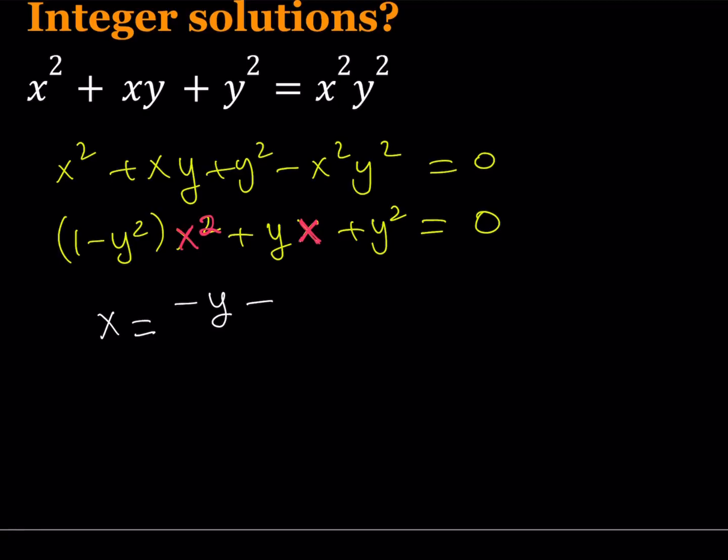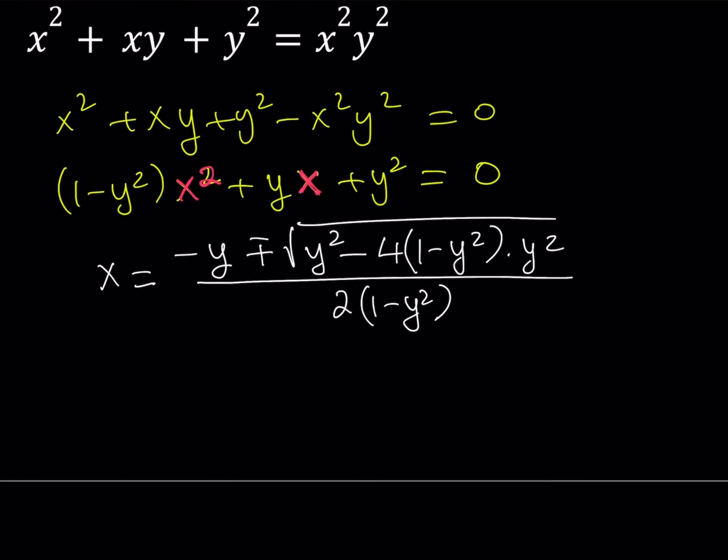plus minus the square root of b squared. In this case, it is y squared minus 4 times a times c. c is y squared. And then all of that is divided by 2a, which is 2 times the quantity 1 minus y squared.